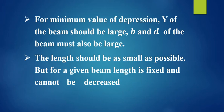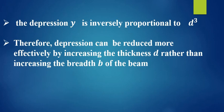But for a given beam, length is fixed and cannot be decreased. Since the depression y is inversely proportional to D cubed, the depression can be reduced more effectively by increasing the thickness d rather than increasing the breadth b of the beam.